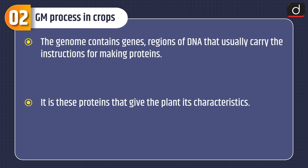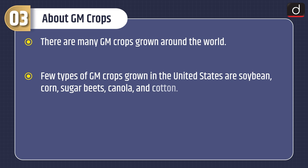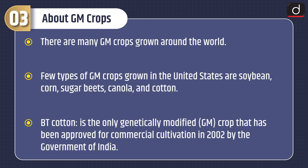Now let's discuss about GM crops. There are many GM crops grown around the world. Few types of GM crops grown in the United States are soya bean, corn, sugar beets, canola, and cotton. Bt cotton is the only GM crop that has been approved for commercial cultivation in India, approved in 2002 by the government of India.